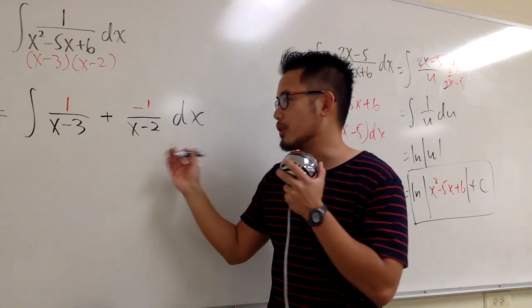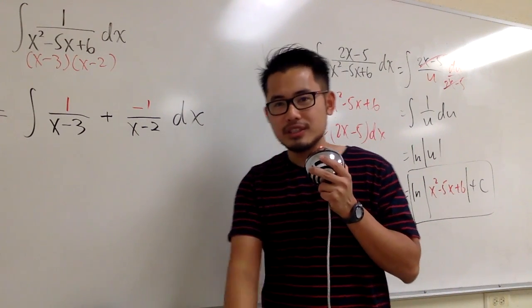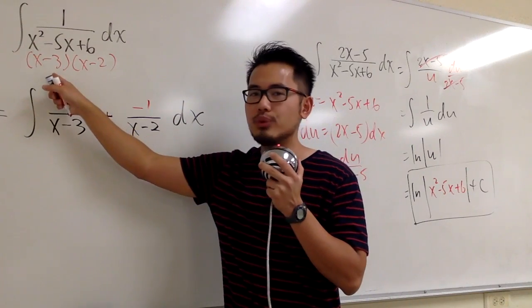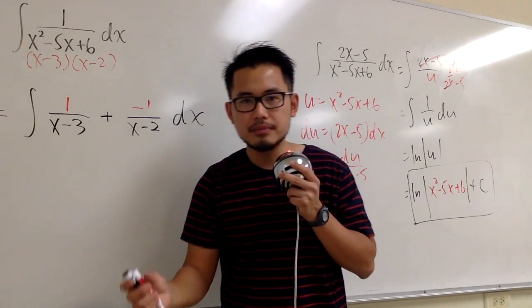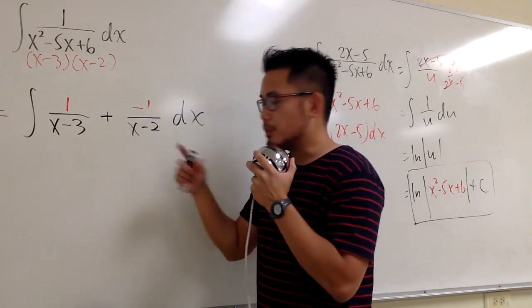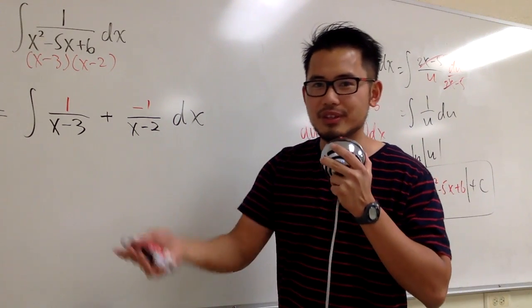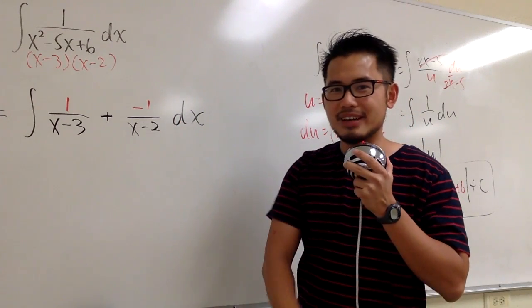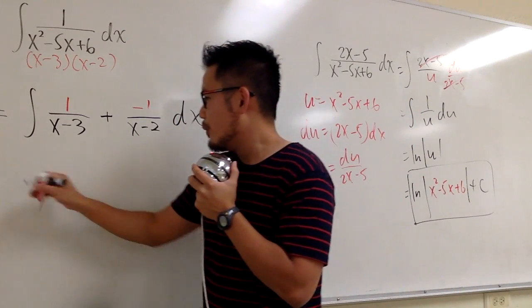That's the cover-up method for the partial fraction. And it only works nicely when you have the factors on the bottom to be linear and they are different. Anyways, I will do more videos if there's requests, I will do more videos for you guys for the cover-up method for partial fractions.